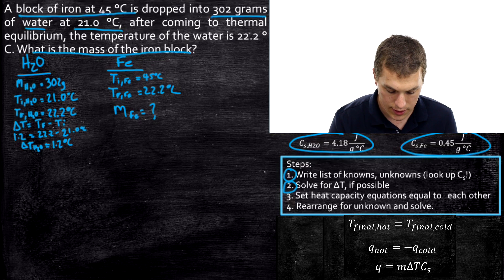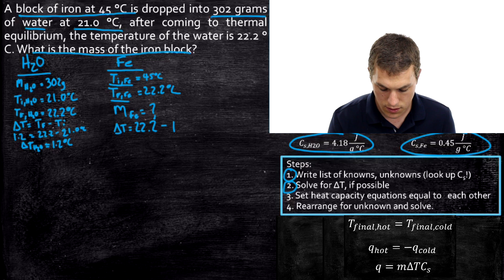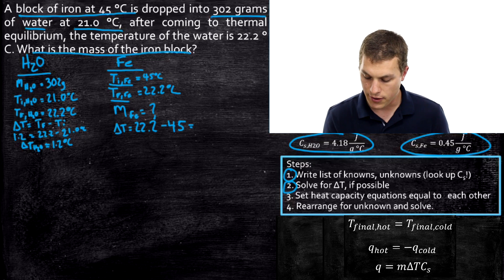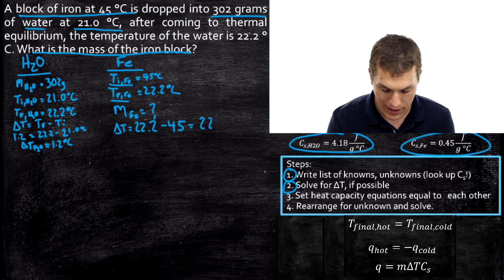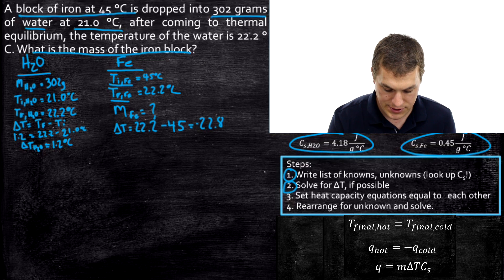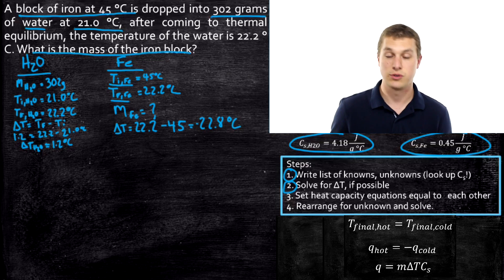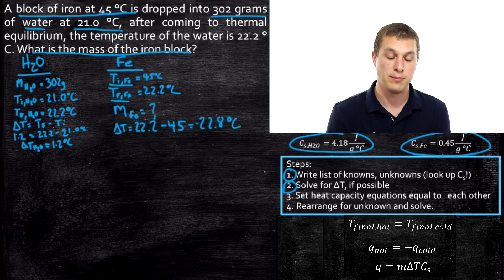For iron, the change in temperature equals final (22.2°C) minus initial (45°C). Notice that when we do final minus initial here, we're going to get a negative number — and that makes sense, because our iron got cooler. We get negative 22.8 degrees Celsius, which tells us the iron dropped in temperature. It's totally fine to get a negative change in temperature — it's never fine to have a negative mass or a negative heat capacity.